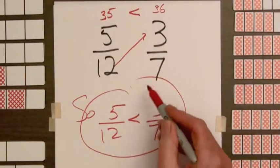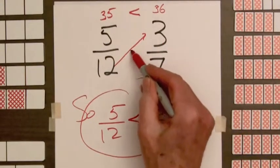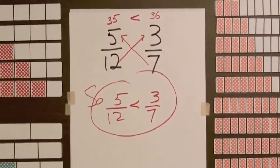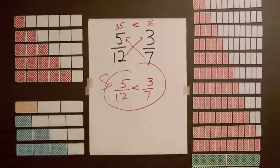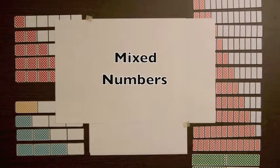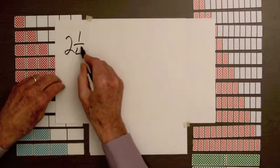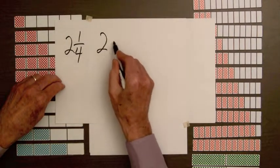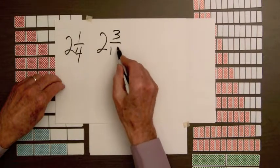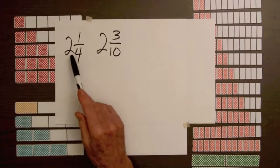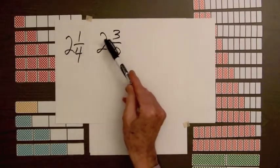Rules like this are fine to use as long as we have introduced inequality of fractions with illustrations and understanding. Now let's look at mixed numbers. Compare 2 1 4th and 2 3 10ths. Now with mixed numbers we compare the whole number parts; these are equal, so we need to compare the two fractions.